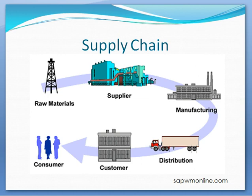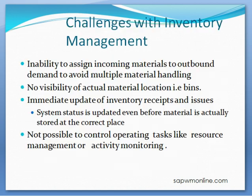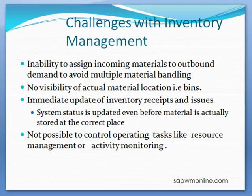With organizations wanting to become more cost effective, improving the way inventory is managed is crucial. Reducing delivery time to customers and minimizing costs of warehousing operations ultimately help to maximize company profits. However, the traditional inventory management solution has challenges: we cannot assign incoming material to outbound demands, causing multiple material handling and waste of time. There is no visibility of material location at bin level, and the system status of stock is updated even before the material is actually stored at the correct place.